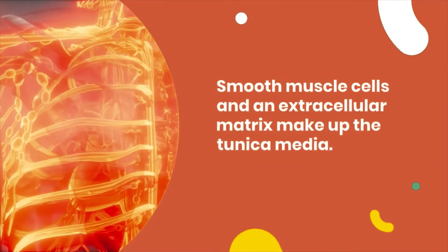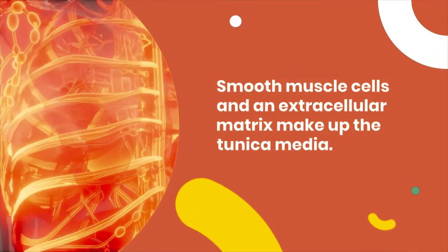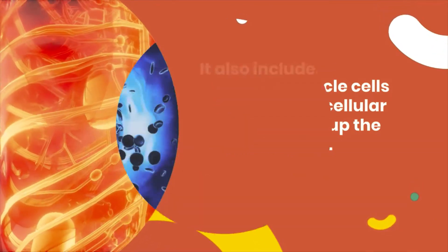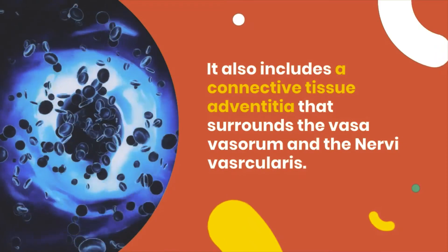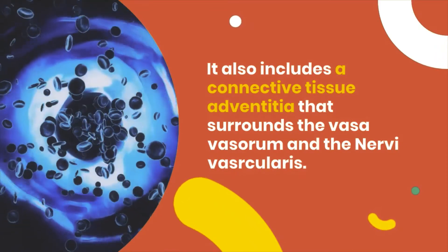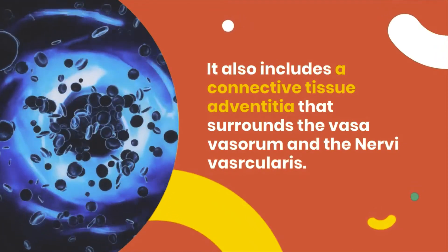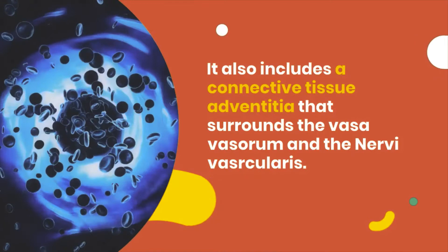Smooth muscle cells and an extracellular matrix make up the tunica media. It also includes a connective tissue adventitia that surrounds the vasa vasorum and the nervi vasorum.